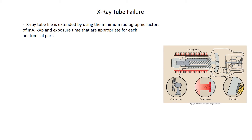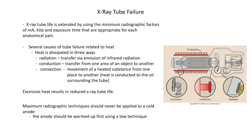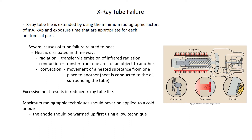Tubes do fail. X-ray tube life is extended by using minimum radiographic factors of mA, kVp, and exposure time appropriate for each anatomical part — lower techniques mean less heat. Several causes of tube failure are related to heat. Heat is dissipated in three ways: radiation, which is transfer via emission of infrared radiation; conduction, transfer from one area of an object to another; and convection, which is the movement of a heated substance from one place to another — for example, x-ray tube heat conducted to the oil surrounding the tube. Excessive heat reduces x-ray tube life, and maximum radiographic technique should never be applied to a cold anode; warm it up first using a low technique.